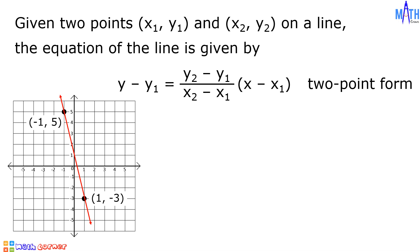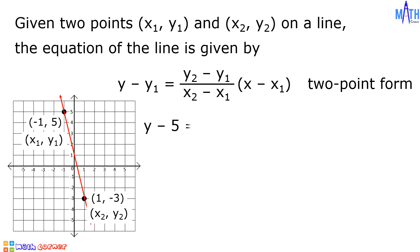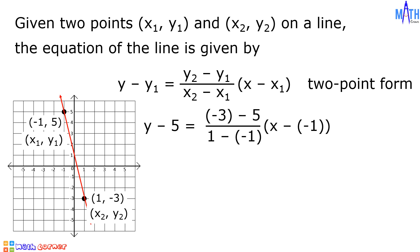Let us consider negative 1, 5 as x sub 1, y sub 1 and 1, negative 3 as x sub 2, y sub 2. Let us substitute the given values in the two-point form. y minus y sub 1 becomes y minus 5 equals y sub 2 minus y sub 1 becomes negative 3 minus 5 over x sub 2 minus x sub 1 becomes 1 minus negative 1 times quantity x minus x sub 1 becomes x minus negative 1.